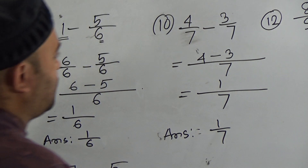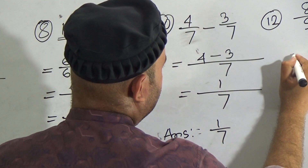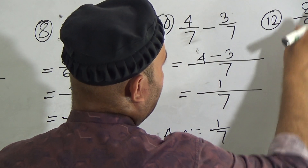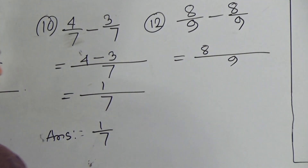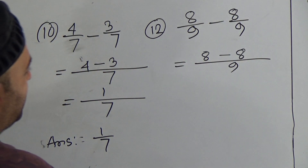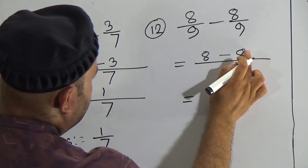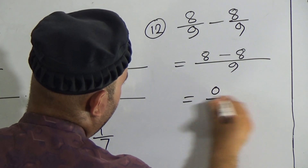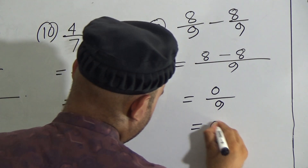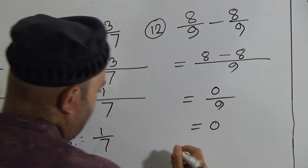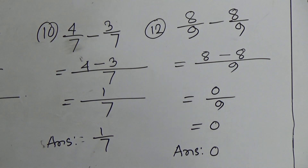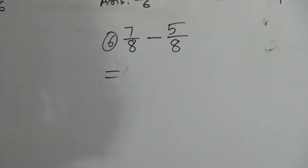Question number 12: 9 is the same denominator, so write 9 as denominator in the second line. Put the first numerator 8, the minus sign, and the second numerator 8. Now, 8 subtracted from 8 will be 0 out of 9. What will be the answer? 0 divided by 9 is of course 0. So the answer will be 0.